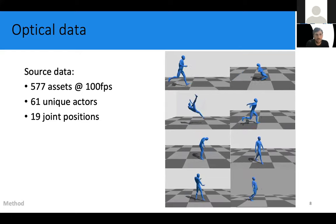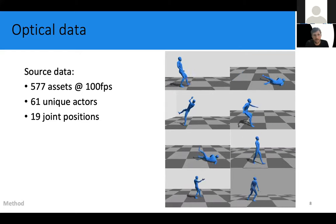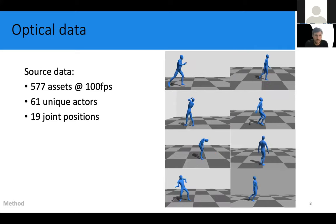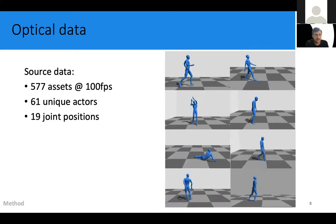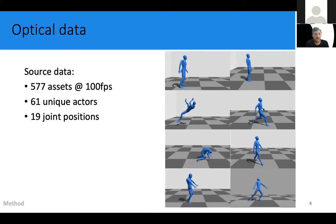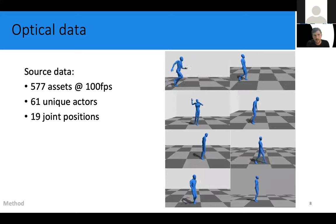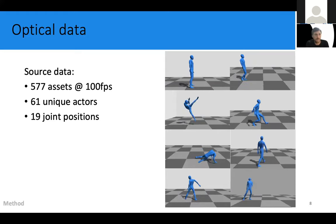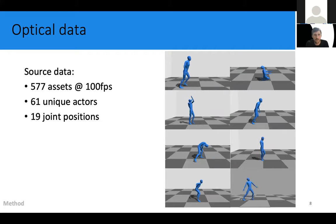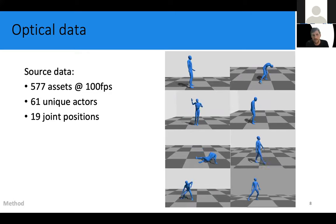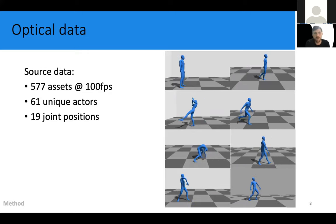It can be easily transformed to an IMU-like representation by subtracting the global positional information. Now the data contains a lot of different motions like walking, running, dancing, among others. Our dataset consisted of 577 different assets, and each asset was sampled at 100 frames per second. Each asset also comes as joint positions of a 19-joint skeleton in a global reference frame.